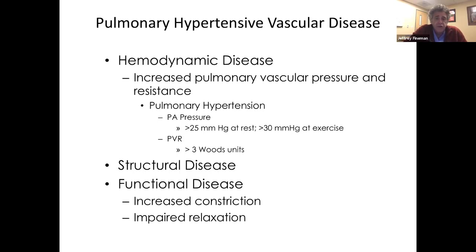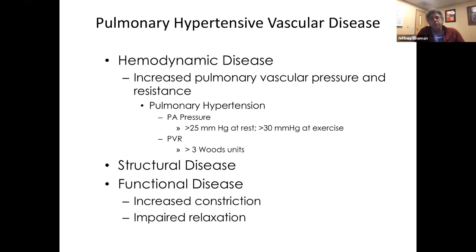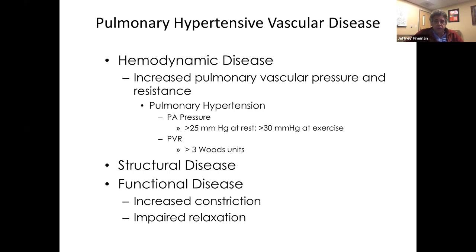Pulmonary hypertension is currently defined as a mean pulmonary artery pressure of 25 mmHg at rest and greater than 30 mmHg during exercise. There's discussion about changing that definition to greater than 20 instead of 25, because there appear to be clinically relevant phenotypes at even lower PA pressures. The calculated resistance threshold is greater than three Wood's units. The problem is there are patients with clinically relevant pulmonary vascular disease who don't meet these criteria — for example, patients with single ventricle physiology where even mild elevations in pulmonary vascular resistance can dramatically impact surgical outcomes.